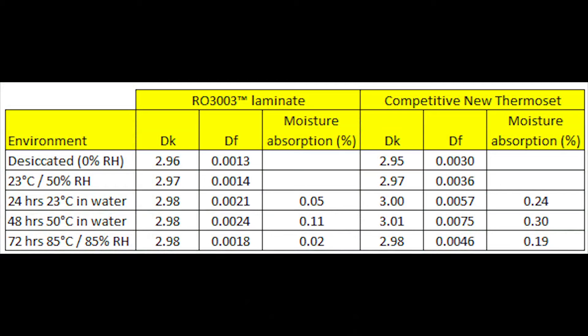On the table shown here, I'm showing two different materials being evaluated for moisture absorption. The first is a ceramic-filled PTFE-based material, which is Rogers RO3003 laminate. The other material is a new competitive PPE-based thermosetting material. These two materials are very significantly different in their formulation; however, their dielectric constants are very similar. The dissipation factors are different, but this still makes for a pretty good comparison of how these materials behave with different moisture exposure.